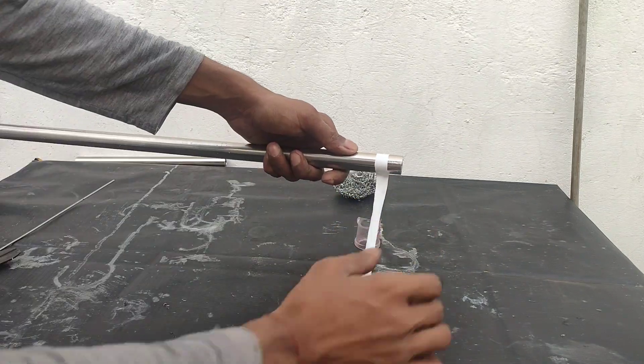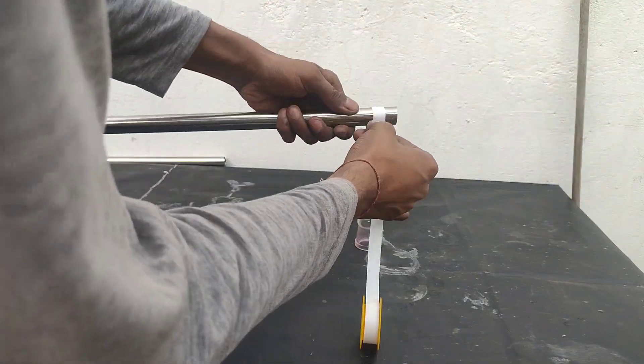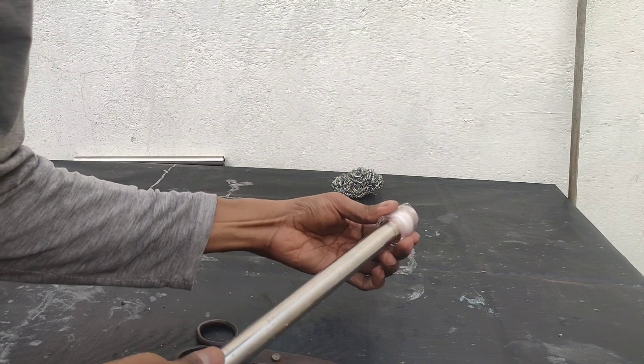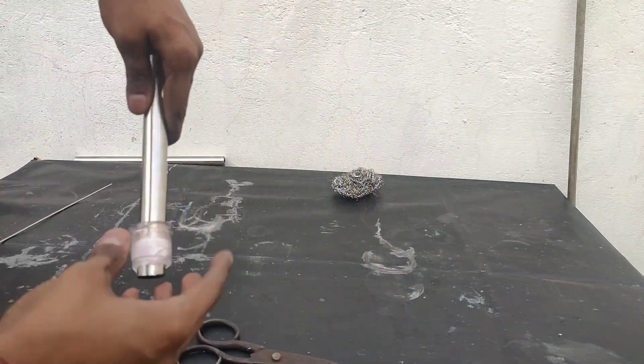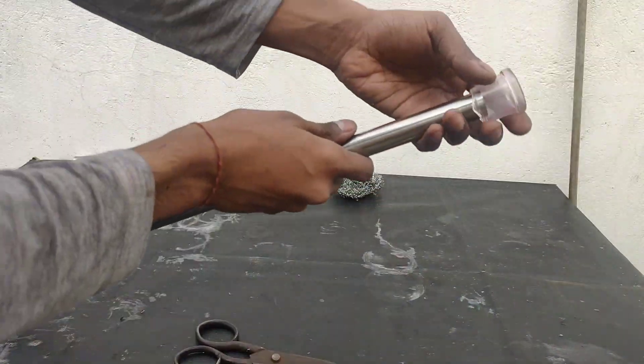Once the column was packed from top to bottom, I wrapped teflon tape at the bottom, leaving some space for the drip tip. I wrapped the tape until it became thick enough to form a tight seal with the B24 socket.